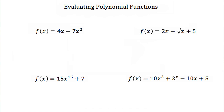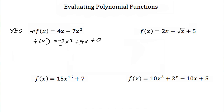Now that we know what a polynomial function is, let's see if we can identify them. Our first example: f(x) = 4x − 7x². This is a polynomial function. I could rewrite this in standard form as −7x² + 4x + 0. All of our coefficients are real numbers and all of our exponents are whole numbers, so yes, this is a polynomial function.